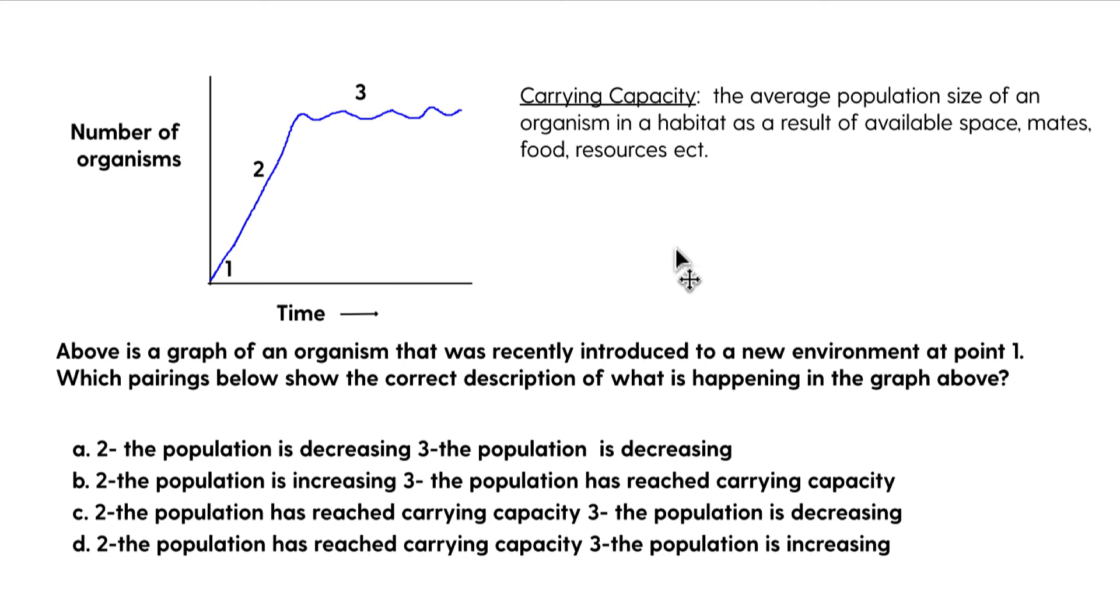So what happens in a given environment if you're introducing an organism here like at point one, let's say you take down a fence and all of a sudden a bunch of deer or elk can get into an environment. There's going to be lots of food for them. There's going to be very little predators there. And so the population is going to be increasing. They're going to be able to mate and reproduce and live very happily.